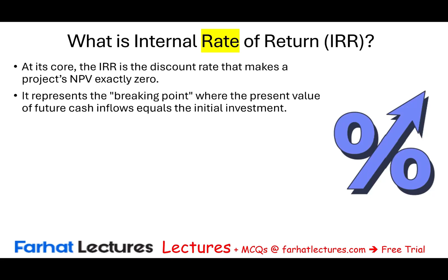Remember what we did in NPV — we discounted all the cash flows. At whatever rate we happened to discount the cash flows, when NPV equals zero, the discount rate equals the internal rate of return. It represents the breaking point where the present value of future cash flows equals the initial investment. Simply put: IRR equals the rate at which NPV equals zero.